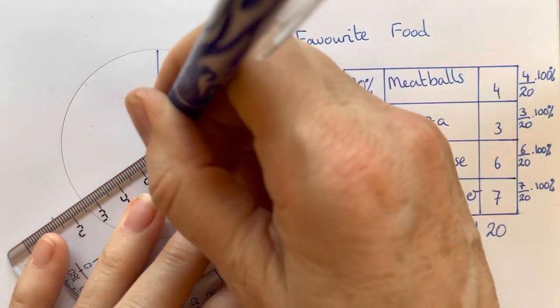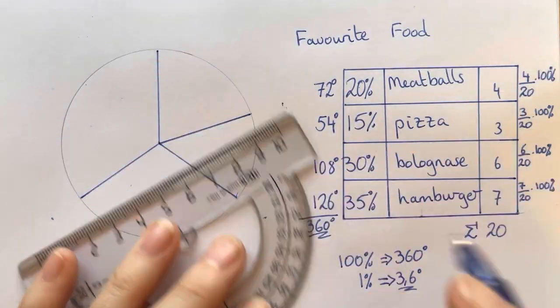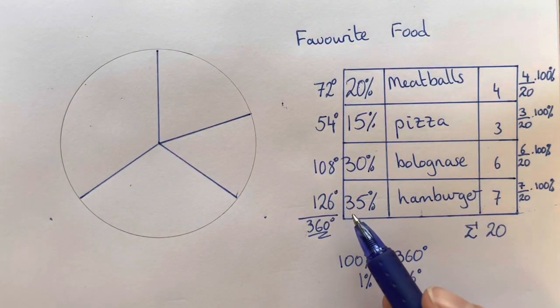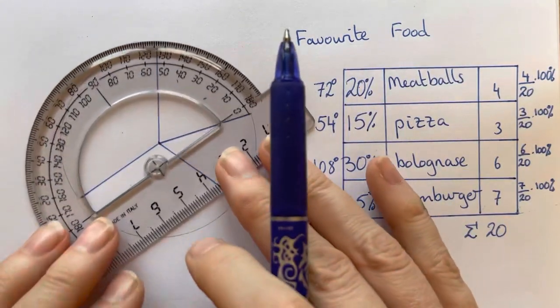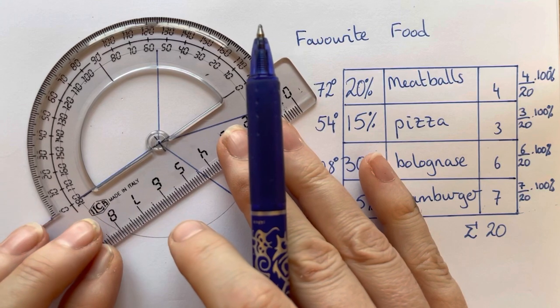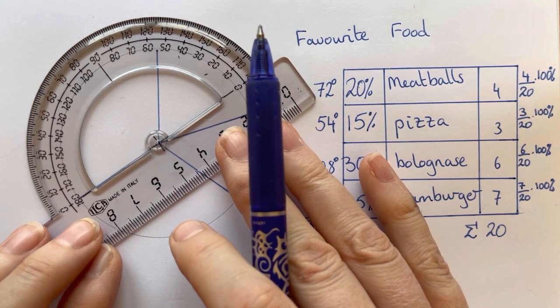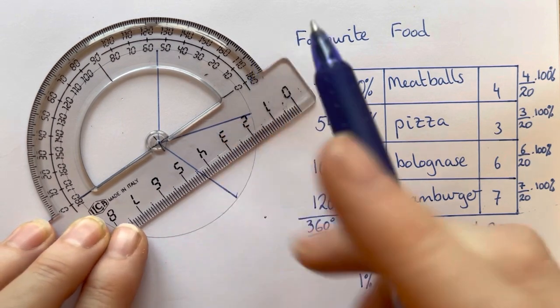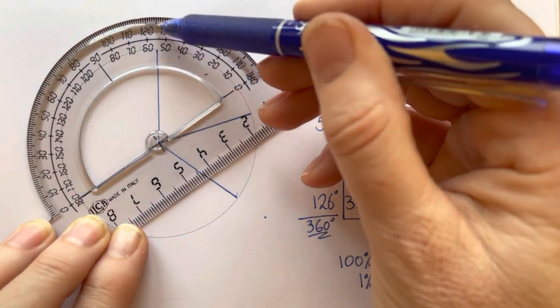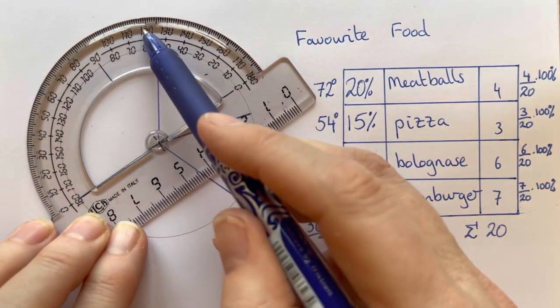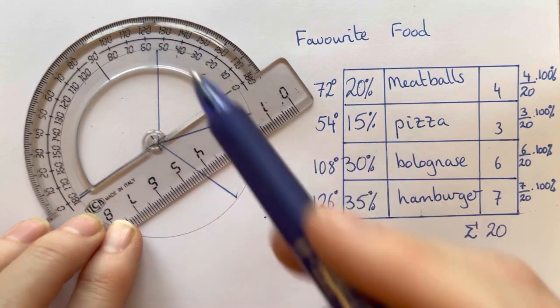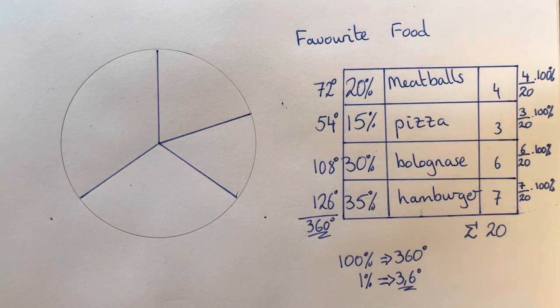And then if we've done everything correctly, our last area here, the hamburger, should be 126 degrees. So let's check our protractor that we've done everything correctly and we should find that the last section here is 126 degrees, which is 110, 120, 125, 126 degrees. And now we can actually start filling them in again with our different colors.